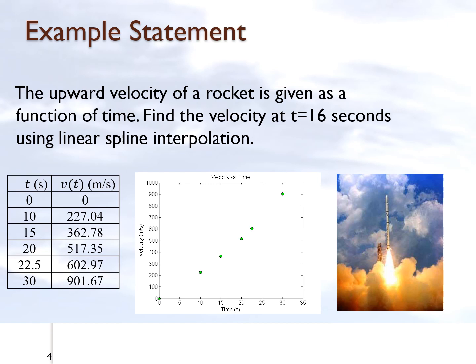Let's take an example. We are given six data points for velocity versus time data, which is plotted here. We want to find the velocity at 16 seconds. The first thing we have to see is that we're not going to draw all the straight lines for the linear spline interpolant.